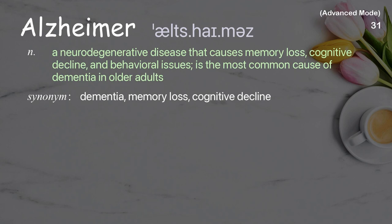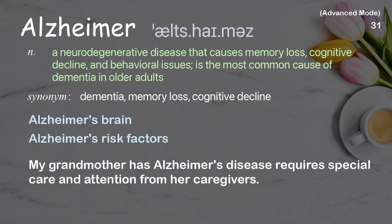Alzheimer's: a neurodegenerative disease that causes memory loss, cognitive decline, and behavioral issues; it is the most common cause of dementia in older adults. Examples: Alzheimer's brain; Alzheimer's risk factors. My grandmother has Alzheimer's disease and requires special care and attention from her caregivers.